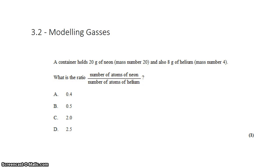David Gann here with another question in Topic 3.2. We're dealing with a container which holds 20 grams of neon with mass number 20, and 8 grams of helium with mass number 4. And we want to know the ratio of the number of atoms of neon to the number of atoms of helium.